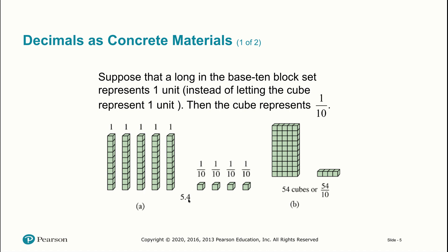Here we only have one digit after the decimal point, so we only need to deal with tenths. We take our longs — normally considered ten units — and treat each as just one unit. Then one cube is one-tenth of a long, so cubes represent one-tenth. We have five longs to represent the five units and four cubes representing four tenths. We have a total of 54 cubes, which is 54 tenths, or 54 over 10. That's how we see that 5.4 is the same as 54 over 10.